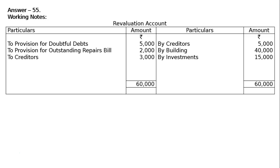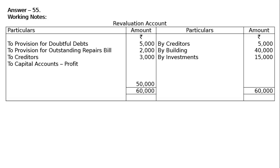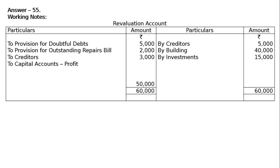The gap is rupees 50,000 — this is transferred to capital accounts as revaluation profit. There is no ratio given, so it will be distributed equally among A and B. A equals B equals rupees 50,000 multiplied by half, that is rupees 25,000 each.